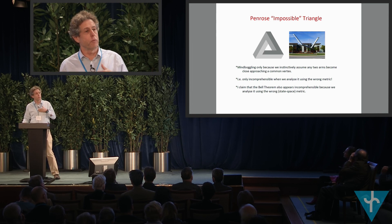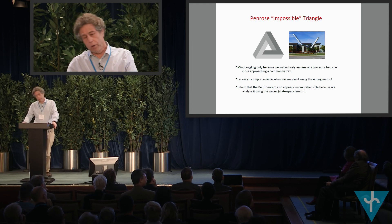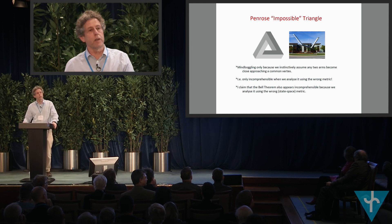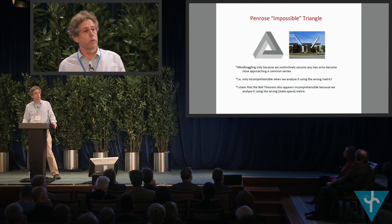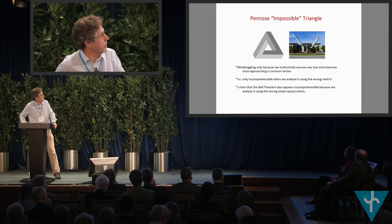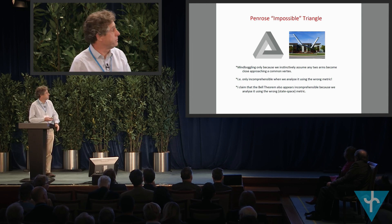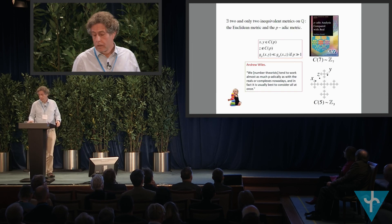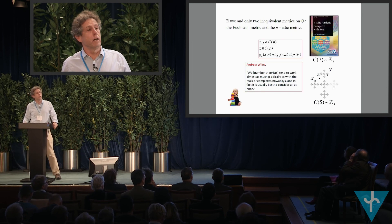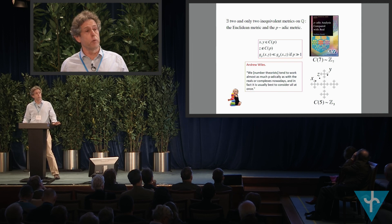We are mind-boggled because we instinctively use the wrong metric to analyze this object, and if we use the right three-dimensional metric it becomes comprehensible. I want to argue that the same problem applies to the Bell theorem: we're using the wrong metric, and in particular the wrong state space metric to analyze it.